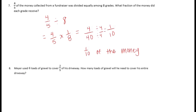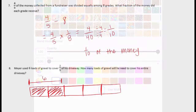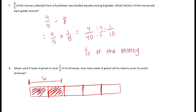Number 8: Meyer used 6 loads of gravel to cover 2/5 of his driveway. How many loads will he need to cover the entire driveway? This is easiest with a tape diagram. He covered 2/5 of his driveway with 6 loads, which means each fifth equals 3 loads. Multiplying 3 loads by all 5 sections: 3 times 5 equals 15 loads.